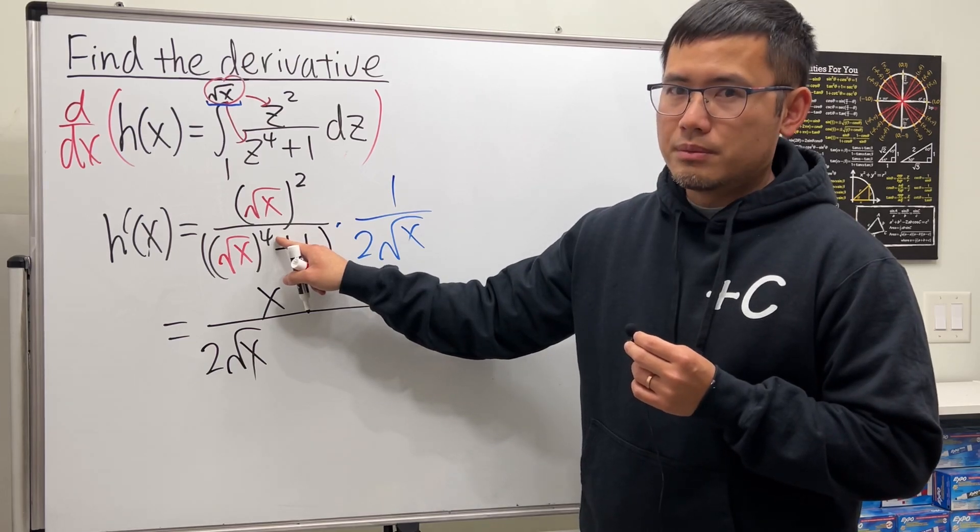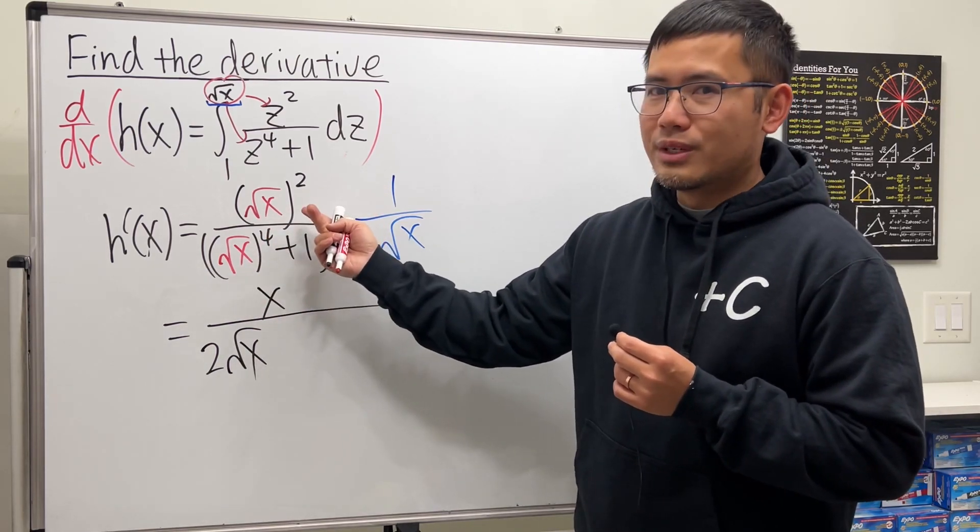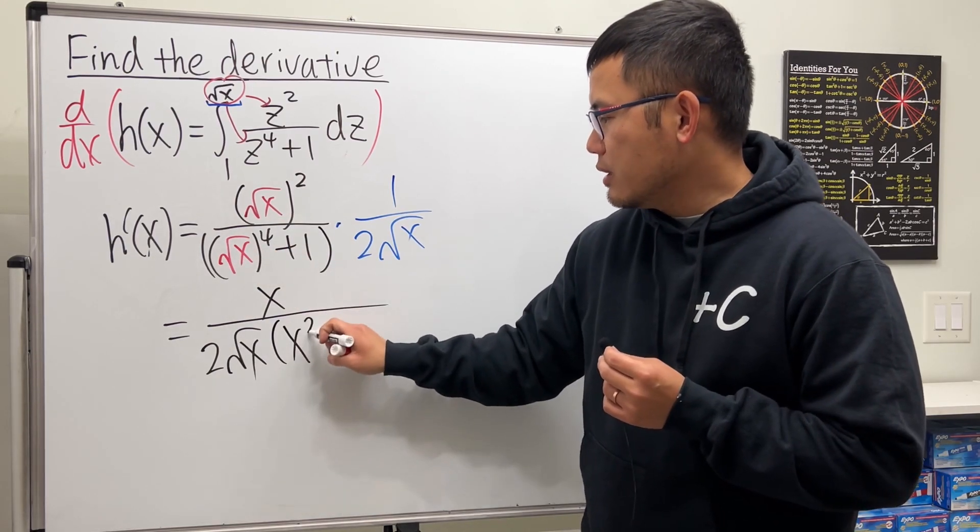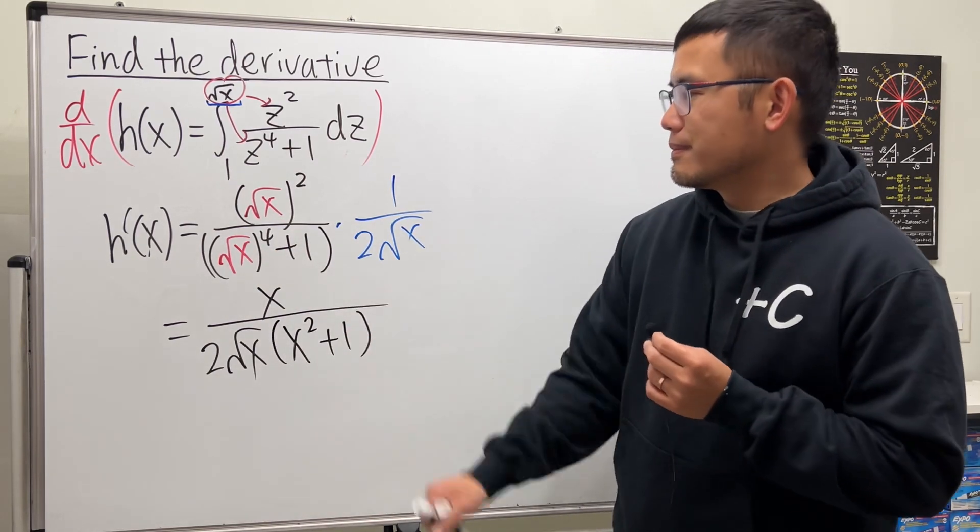This is to the second power and the second power. So you will just get x squared. So you will have x squared here, plus 1.